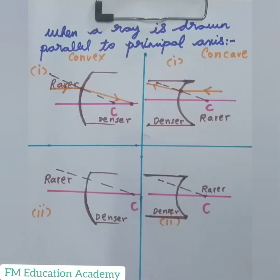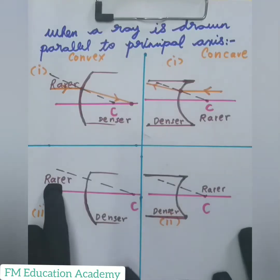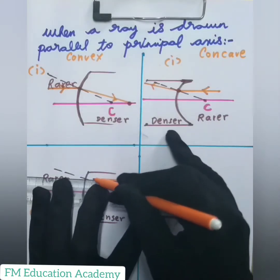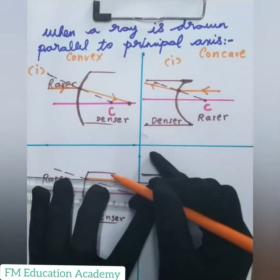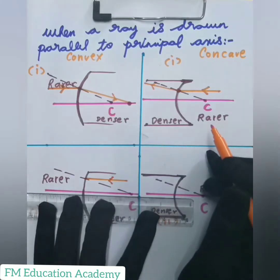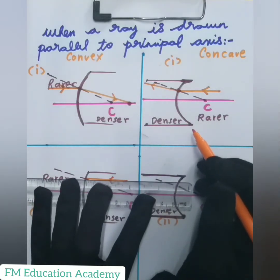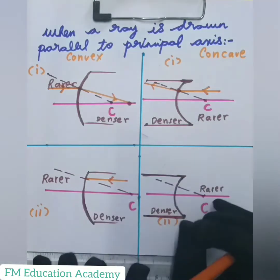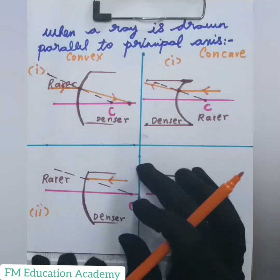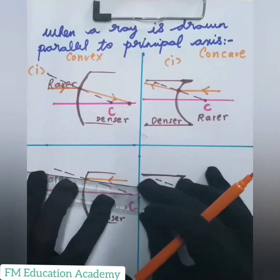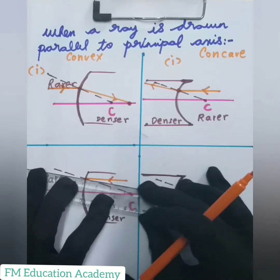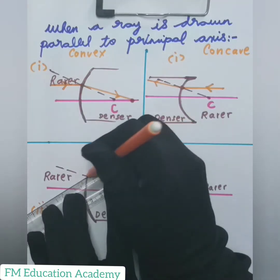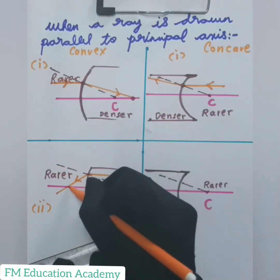Now let us see what happens when a ray travels from denser to rarer medium in a convex surface. A ray is parallel to the principal axis. Since it is traveling from denser to rarer medium, according to the rule it should bend away from the normal. So instead of bending towards the normal, it will bend away from the normal and meets the principal axis at this point.